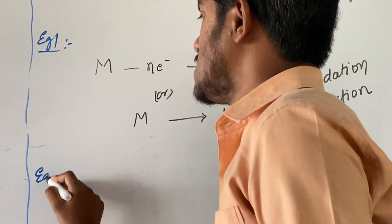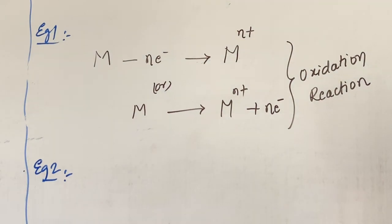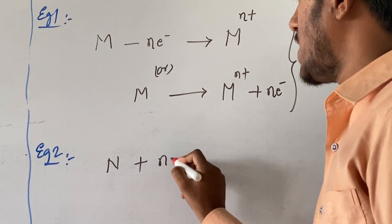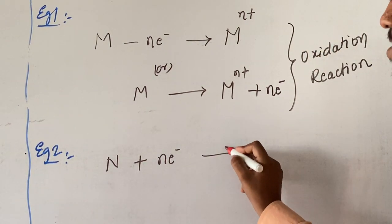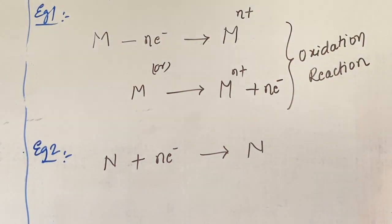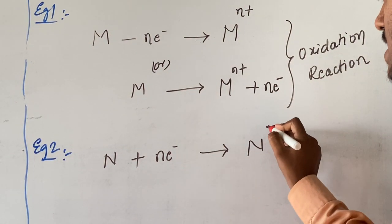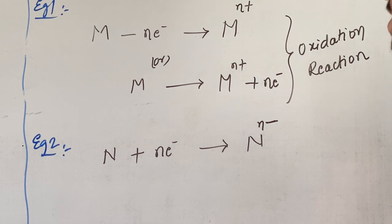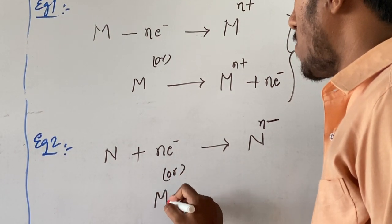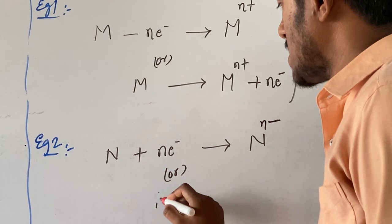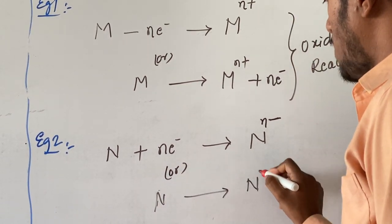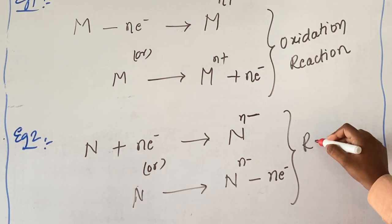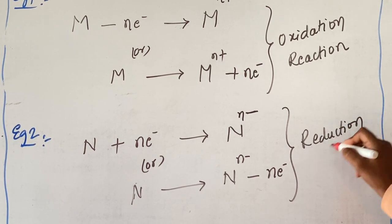In the same way, if the considered element is a non-metal represented by N, non-metals have the tendency to gain electrons — electron negativity. By gaining N electrons, the non-metal forms an anion: N + Ne⁻ → Nⁿ⁻. This reaction is related to the reduction reaction.